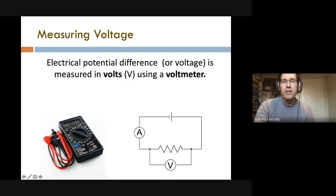Technically, the voltmeter is in parallel with the resistor, but it has such a high resistance that almost no current flows through it.